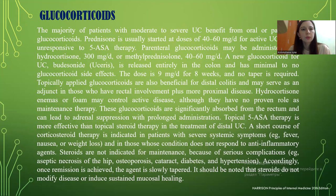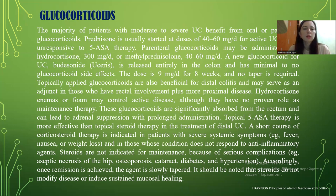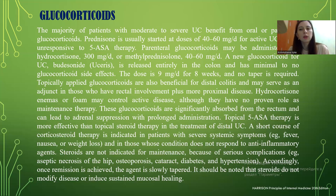Glucocorticoid steroids. The majority of patients with moderate to severe ulcerative colitis benefit from oral or parenteral glucocorticoid steroids. Prednisolone is usually started at a dose of 40–60 mg a day for active ulcerative colitis that is unresponsive to 5-ASA therapy. Parenteral glucocorticoids may be administered as hydrocortisone 300 mg a day or methylprednisolone 46 mg a day. A newer glucocorticoid for ulcerative colitis, budesonide, is released in the colon and has minimal glucocorticoid steroid side effects. The dose is 9 mg a day for 8 weeks.